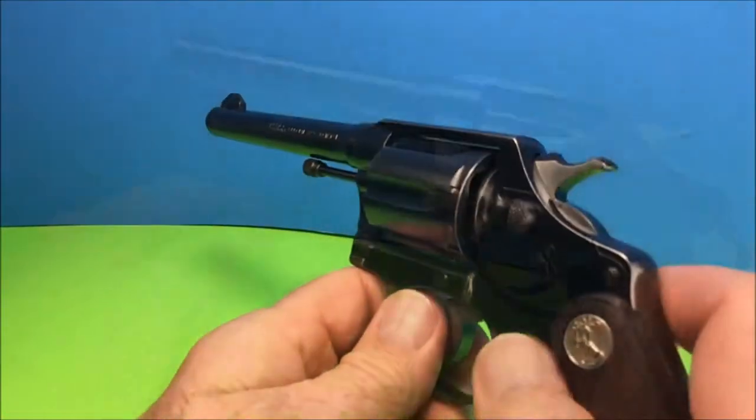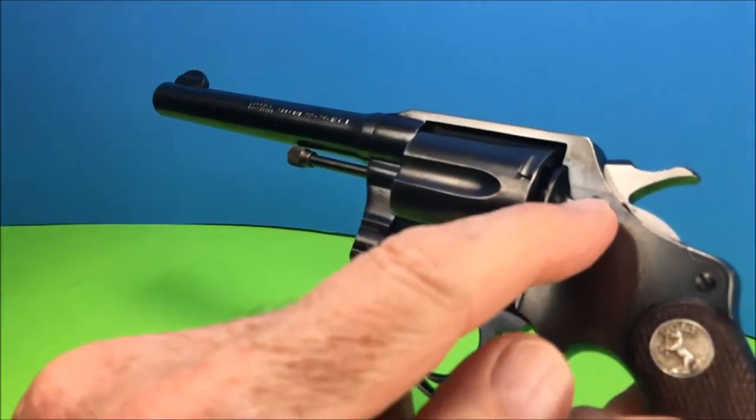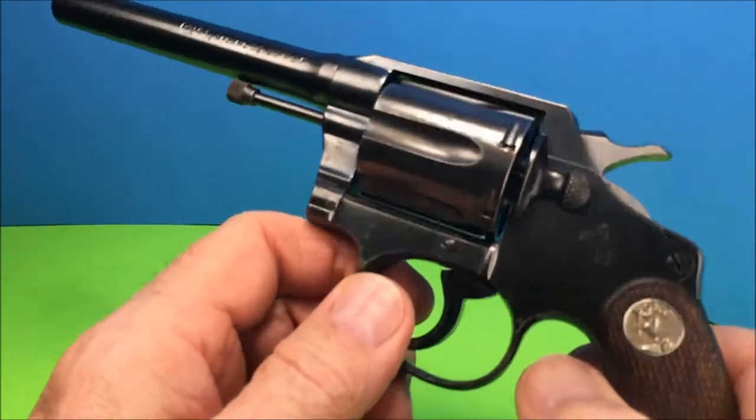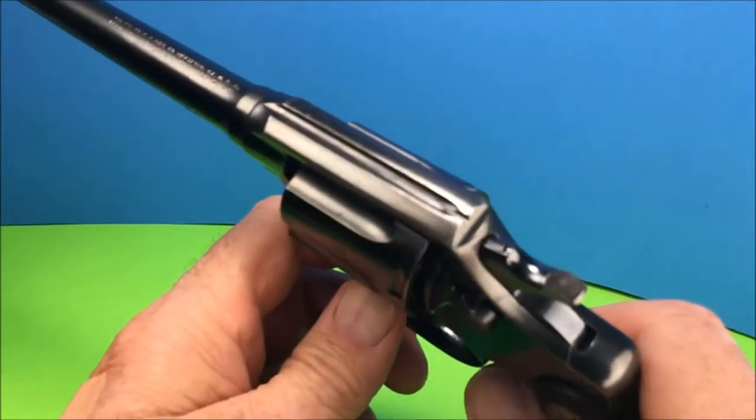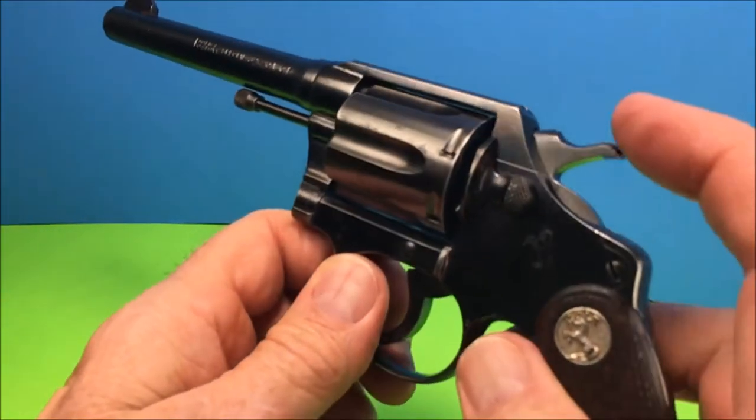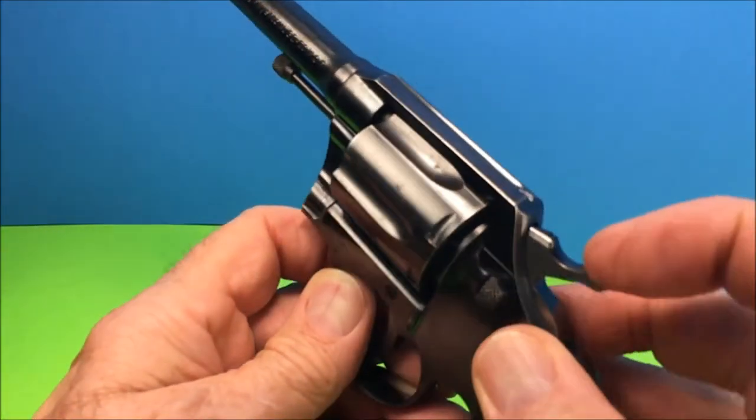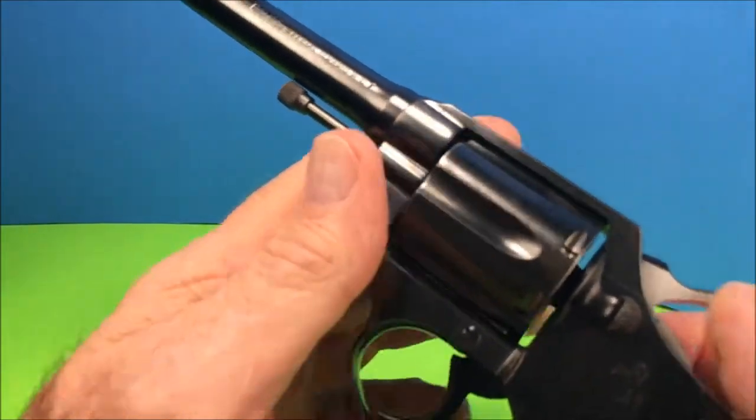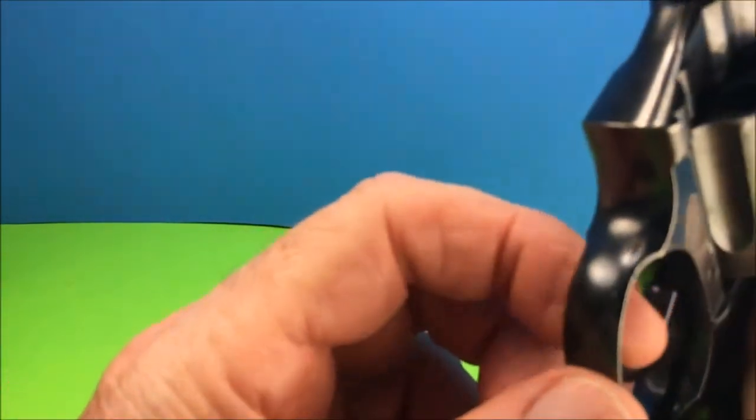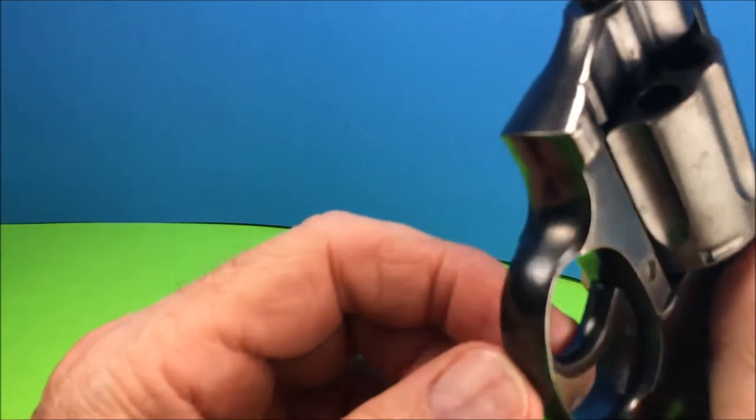This is a pre-war model. You can tell from the checkering on the cylinder release and checkering on the hammer strut. The post-war didn't have that. It was smooth here and it was serrated on the hammer. It's got a smooth trigger. Sometimes it was checkered.